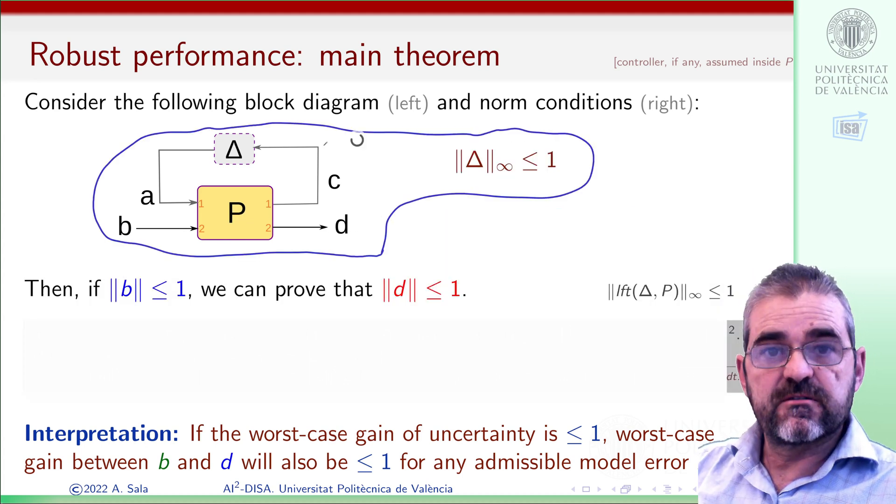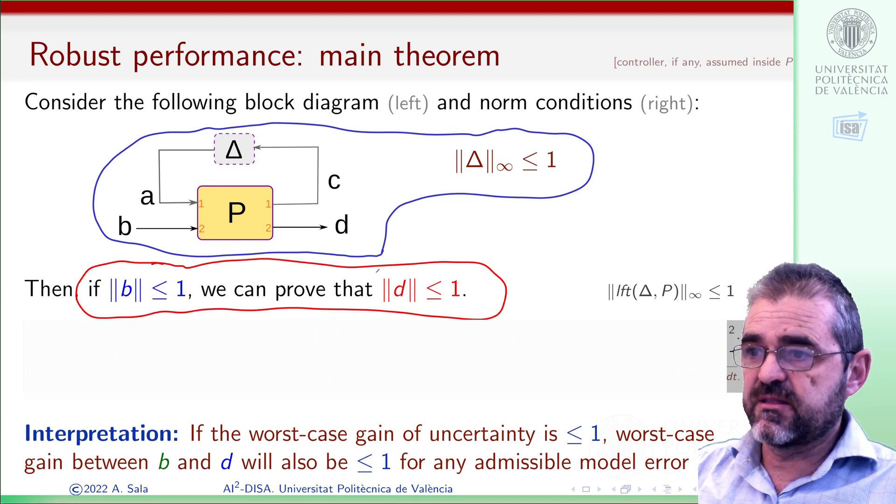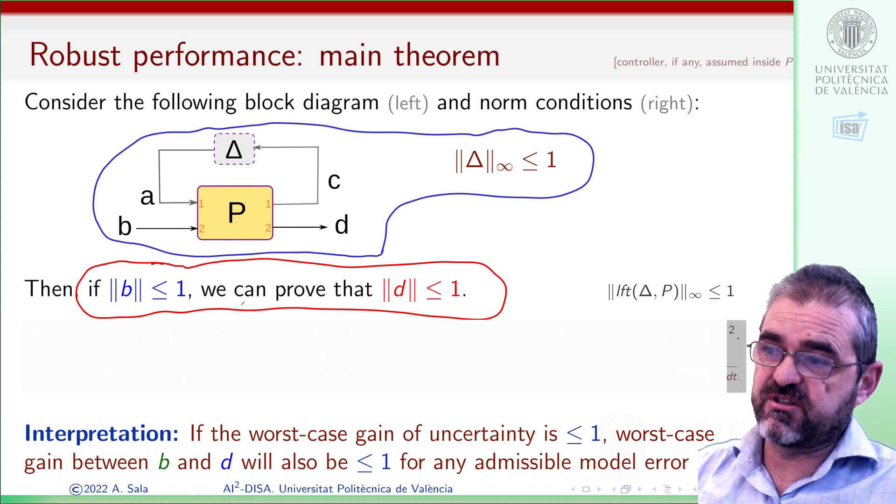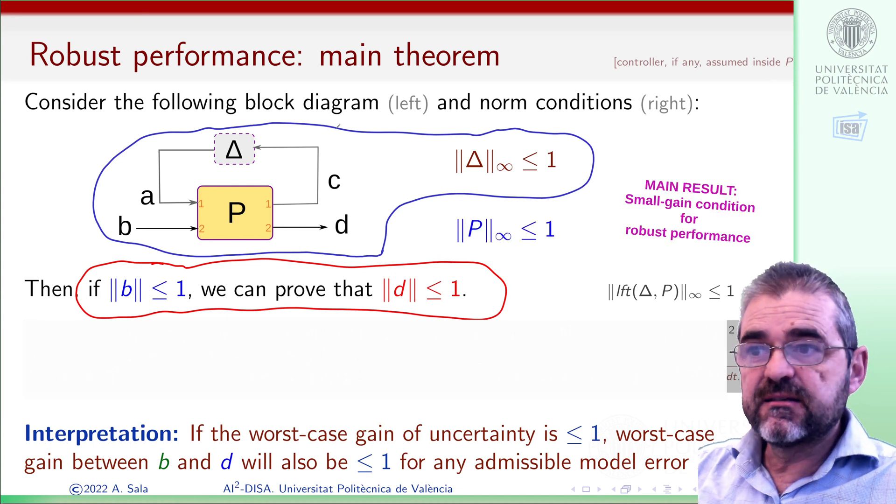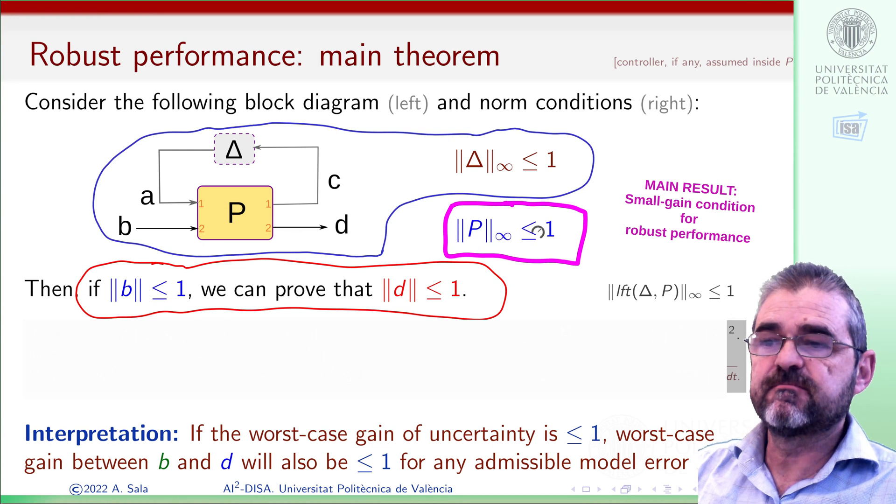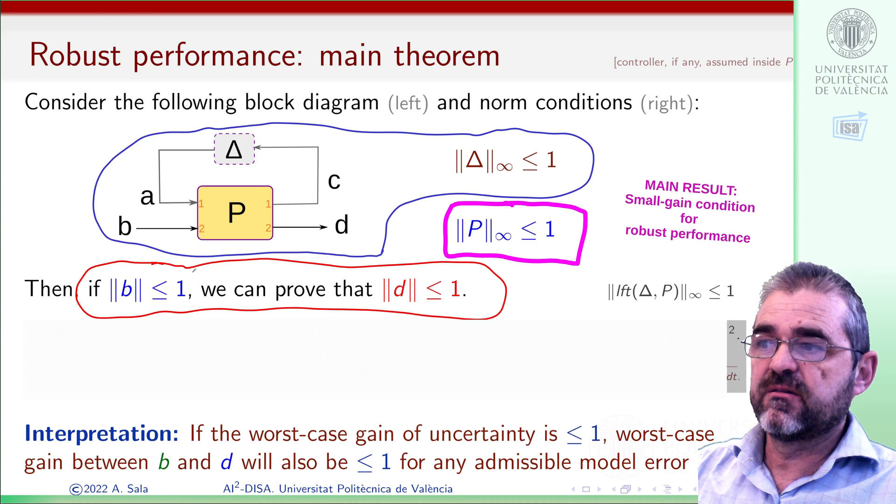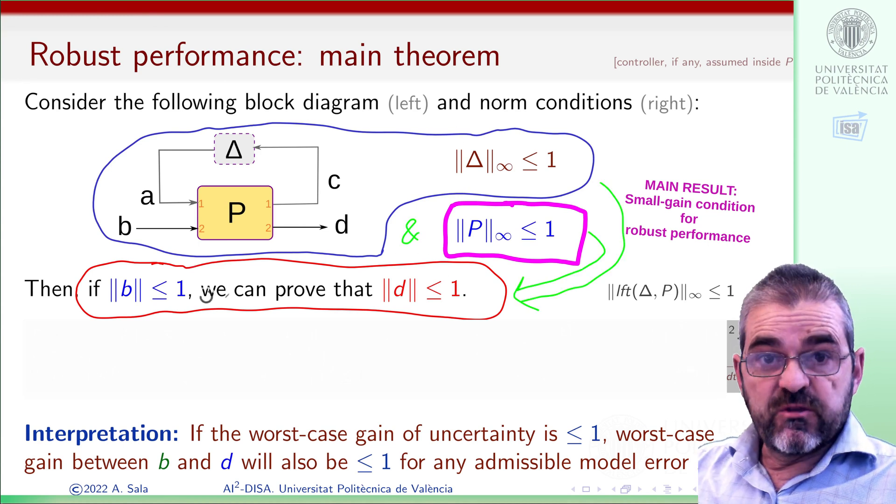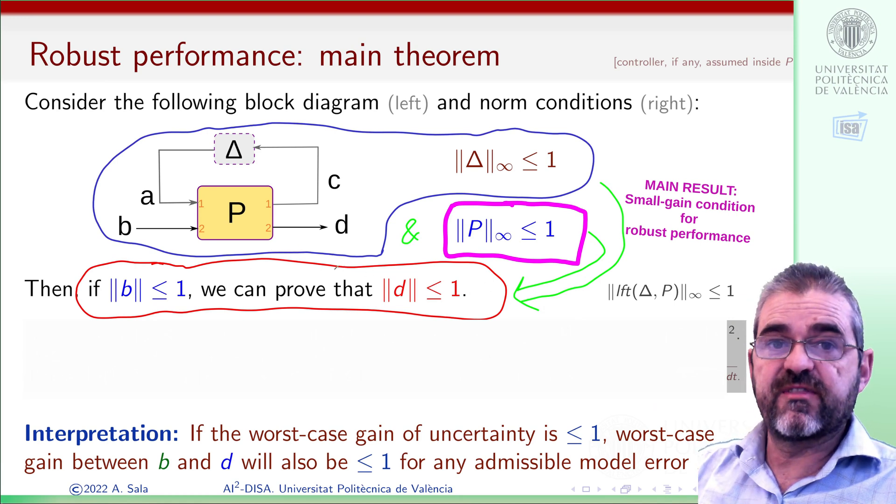So what I have encircled now in blue is sort of the problem statement, and the thing I highlighted in red is the thing we must prove. Then, the missing link is this condition. If the gain of P, worst-case gain, is bounded by 1, then the blue and pink things imply the red one, and that's the main result of this video. Let's prove that.